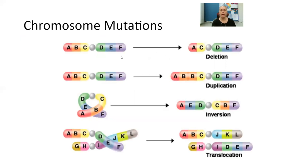So let's look at these. The normal pattern would be ABC and DEF. In deletion, the B is now missing — it's been completely deleted and you have AC, DEF. In duplication, we might have ABC, DEF, but the B duplicates in the pattern and now we have ABBC, DEF. So you can see we've got that duplication of that one letter.